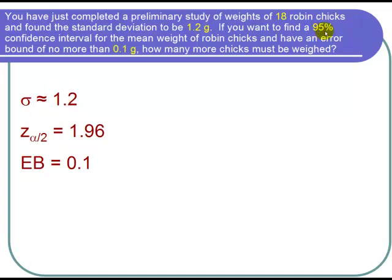If we want a 95% confidence interval, then the z sub alpha over 2, that corresponds to 95%, is 1.96.